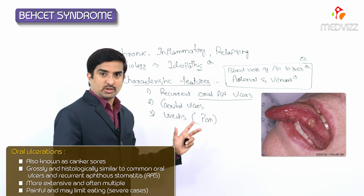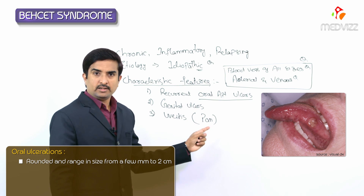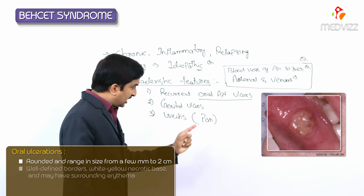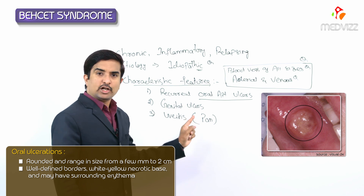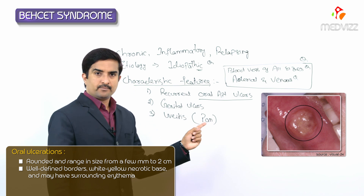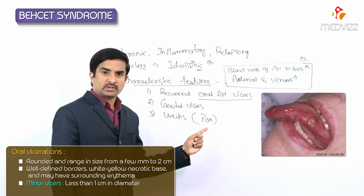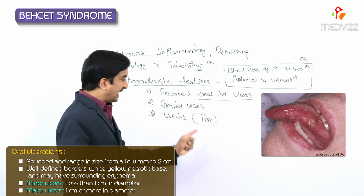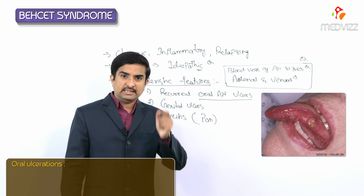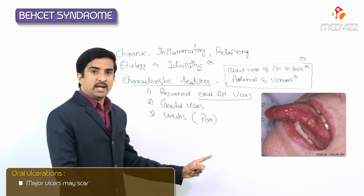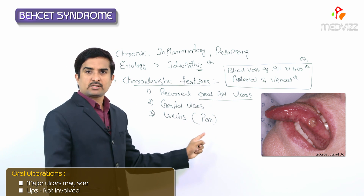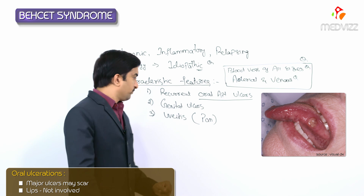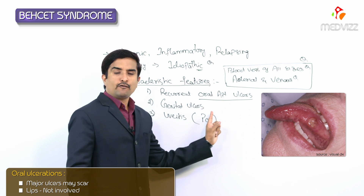Morphologically, these ulcers are rounded and range in size from a few millimeters to two centimeters, with well-defined borders and a white-yellow necrotic base, with possible surrounding erythema. Minor ulcers are less than one centimeter in diameter; major ulcers are at least one centimeter in diameter and may form scars. The outer portions of the lips are not involved — only the mucous membranes of the oral cavity.